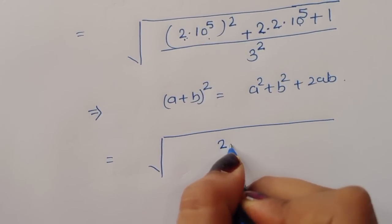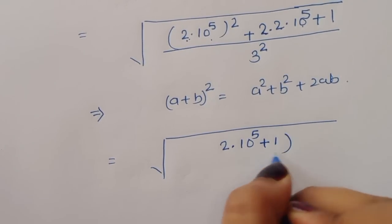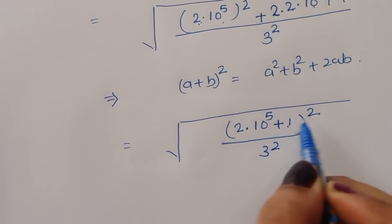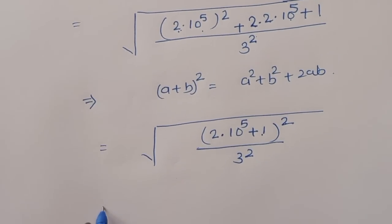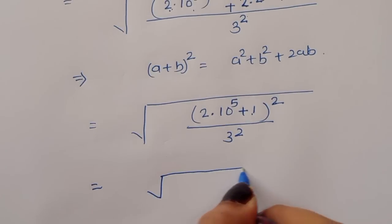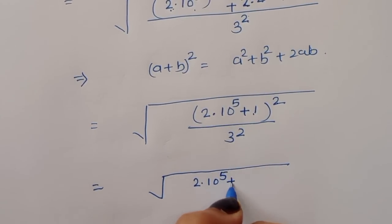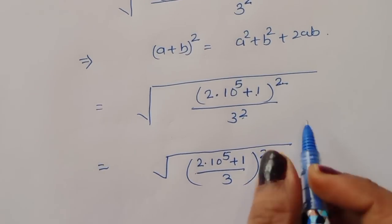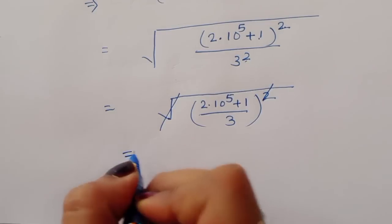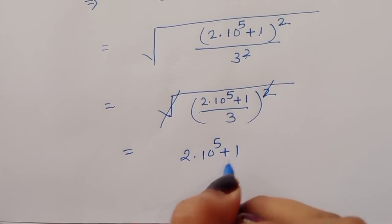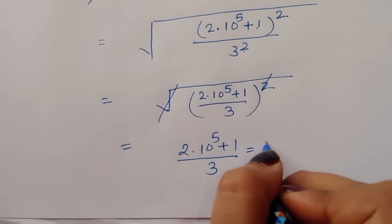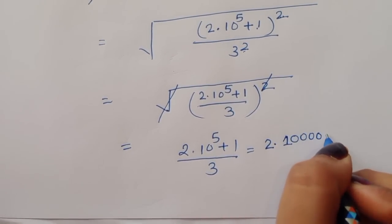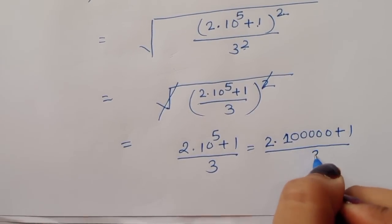So this is a = 2 times 10 raise to 5, plus 1, divided by 3. Using the formula (a+b)² = a² + 2ab + b², we can write: 2 times 10 raise to 5 plus 1, divided by 3, is equal to 2 times 100000 plus 1, divided by 3.